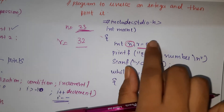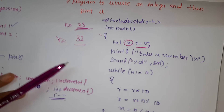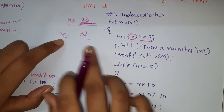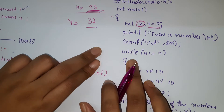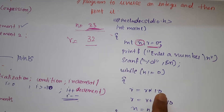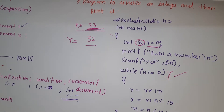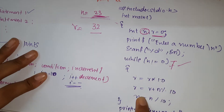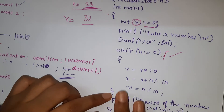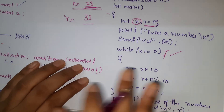n is 23 and r is initially zero, since we don't know the reverse yet we take r as zero. We print 'enter a number', scan in the value — here I enter 23. The while condition is: while n not equals to zero. Since 23 is not equals to zero, the condition is true. It enters the loop and we apply the logic to reverse the number.